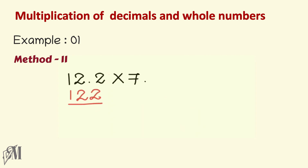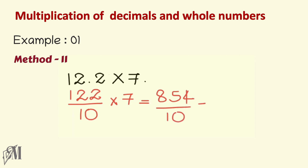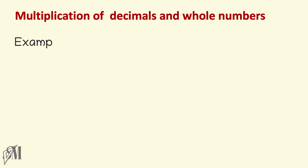In the second method, we write the decimal as a fraction: 12.2 is 122 over 10. We then multiply by 7 to get 854 over 10. Since the denominator is 10, the answer must have one decimal place, giving us 85.4 as the final answer.